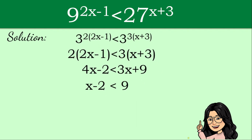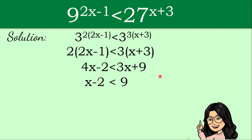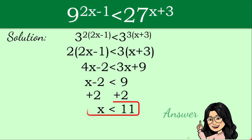We already have x on the left side with negative 2. So we add 2 to both sides to solve for x. That leaves us with 9 plus 2, which gives a sum of 11. So x is less than positive 11, and that is our answer for this exponential inequality. You can review our solution once more, and hopefully we have the same answer.